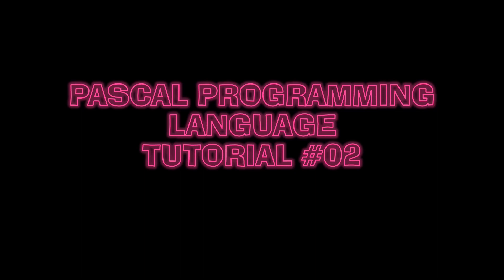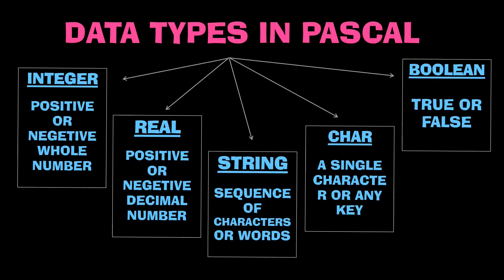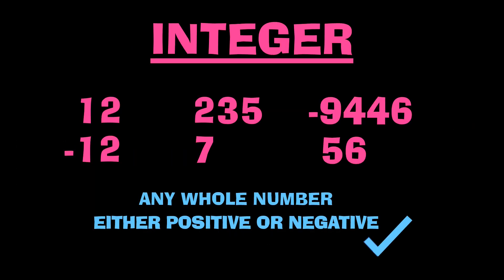In our day-to-day life we deal with different data types, and so do computer programs. When a program is executed, the input and output should be stored in computer memory. The space needed for each is defined according to the data types. Pascal has five data types: integer, real, string, char, and boolean.